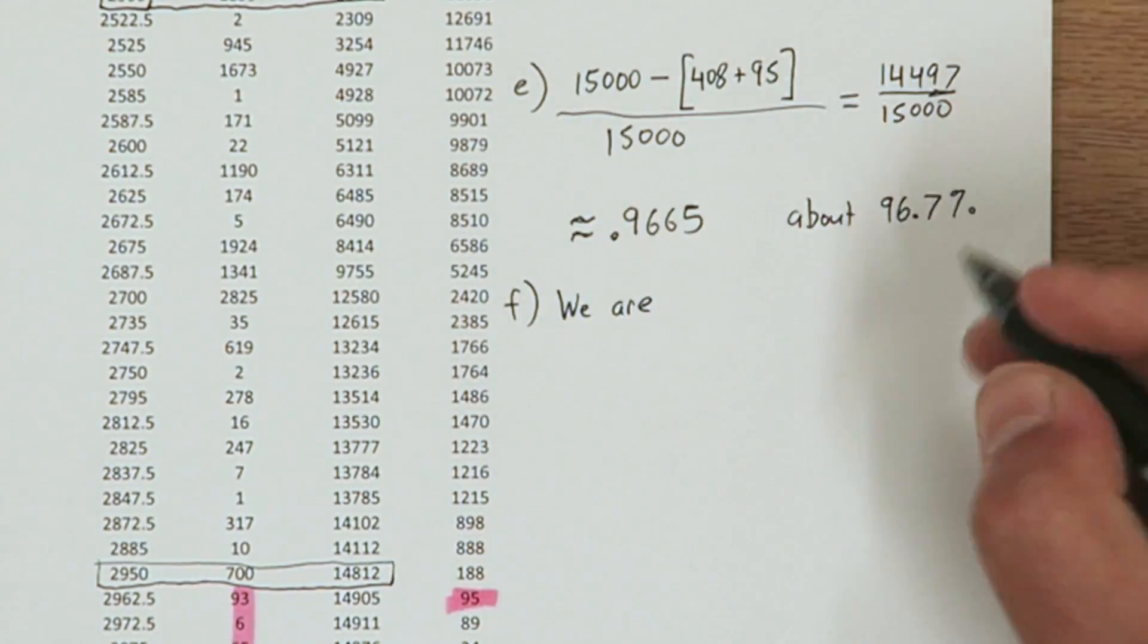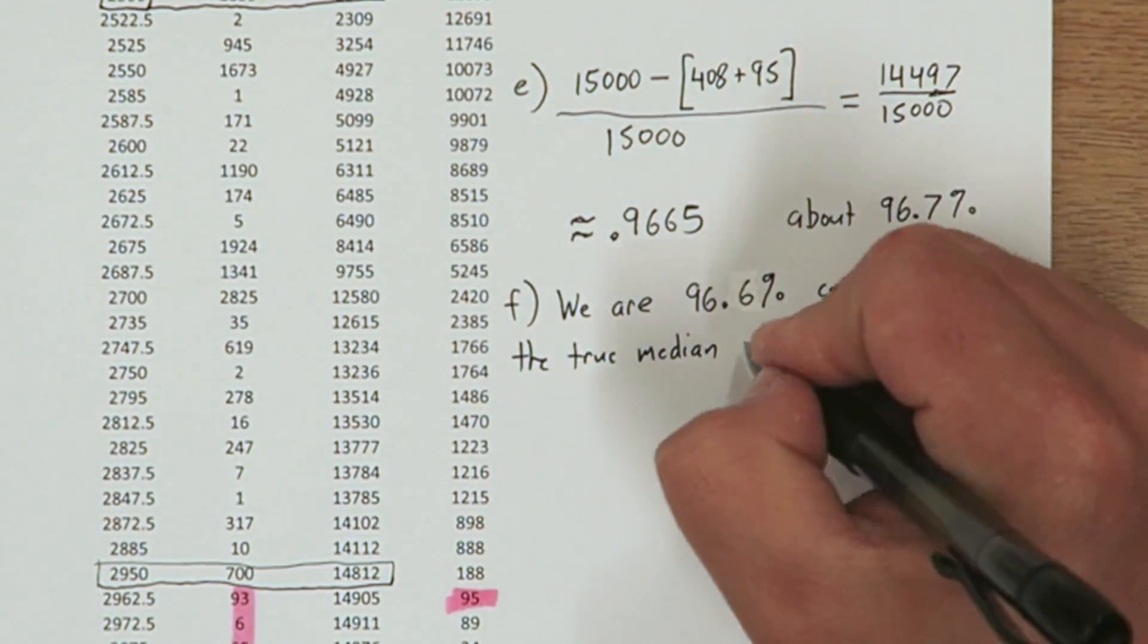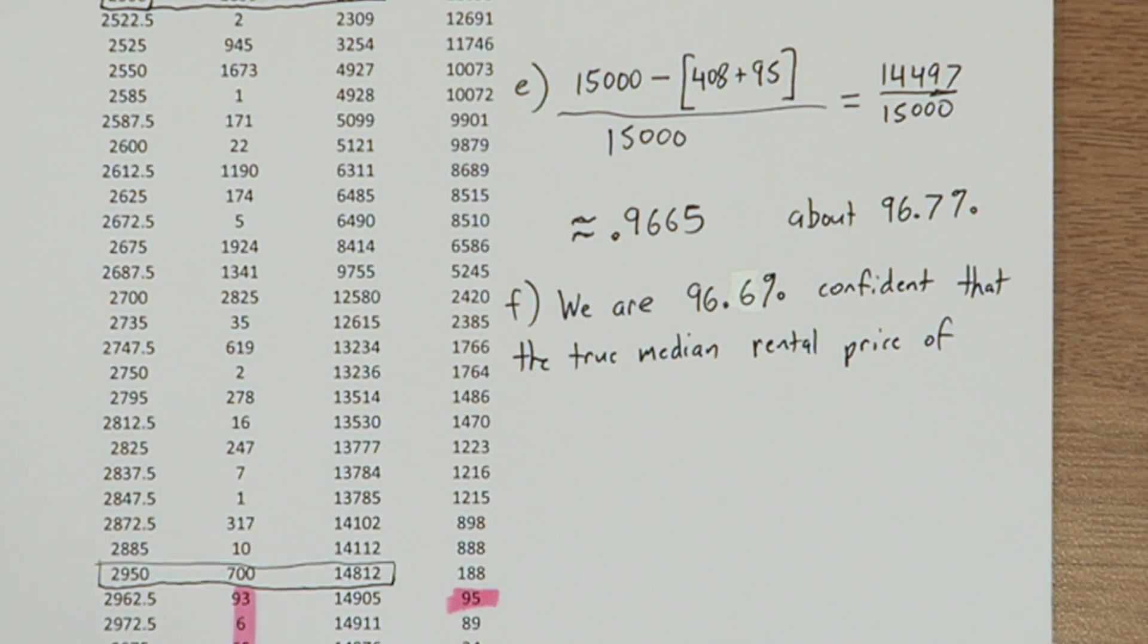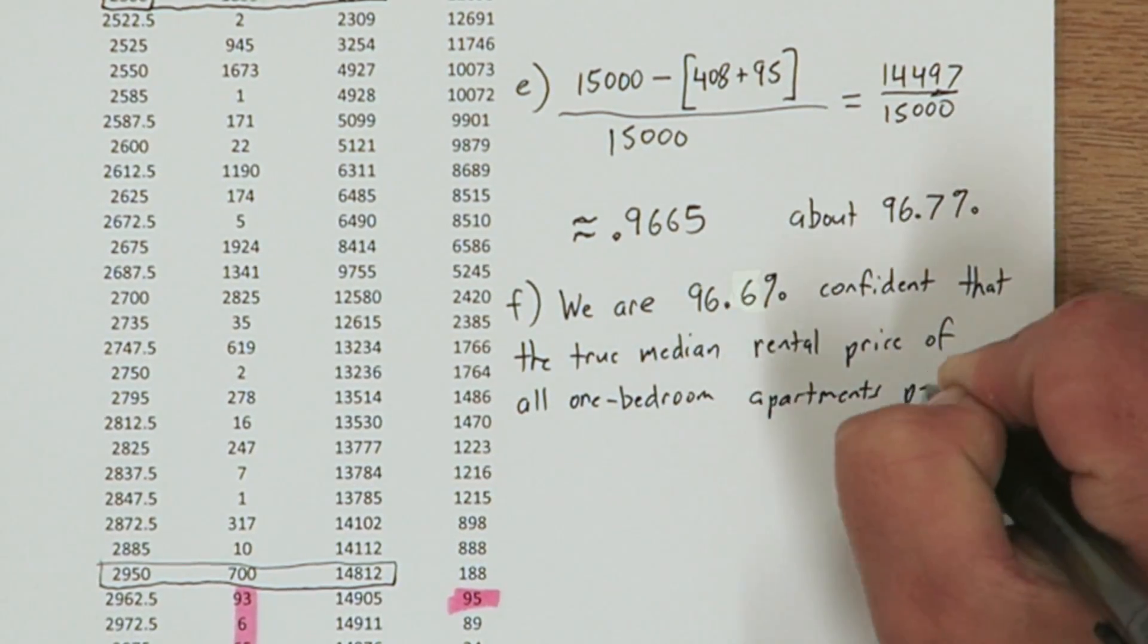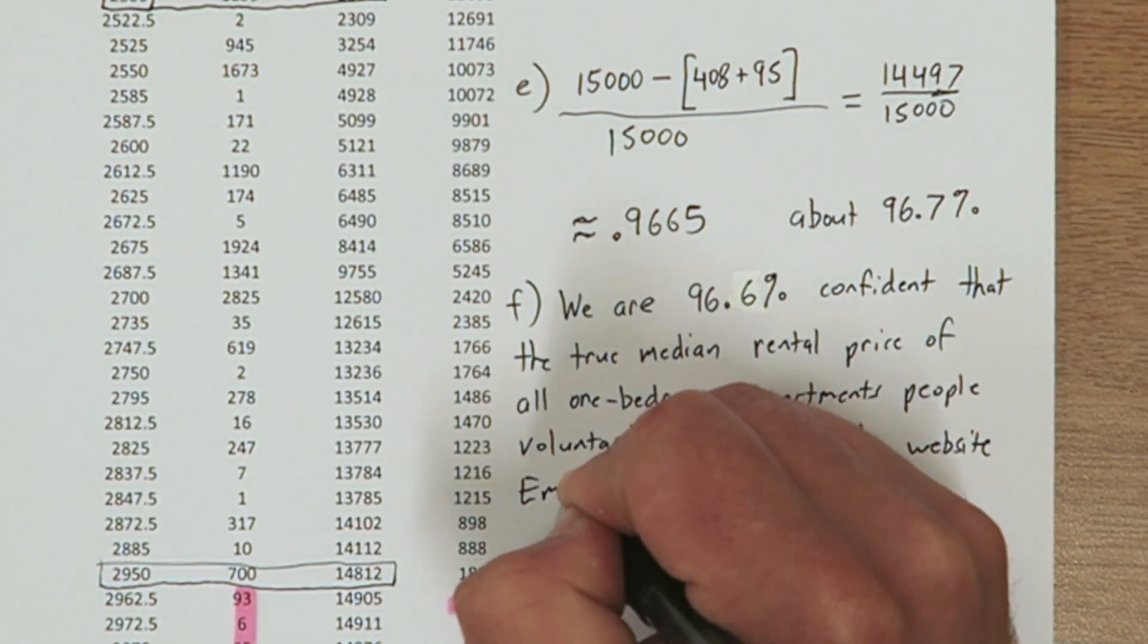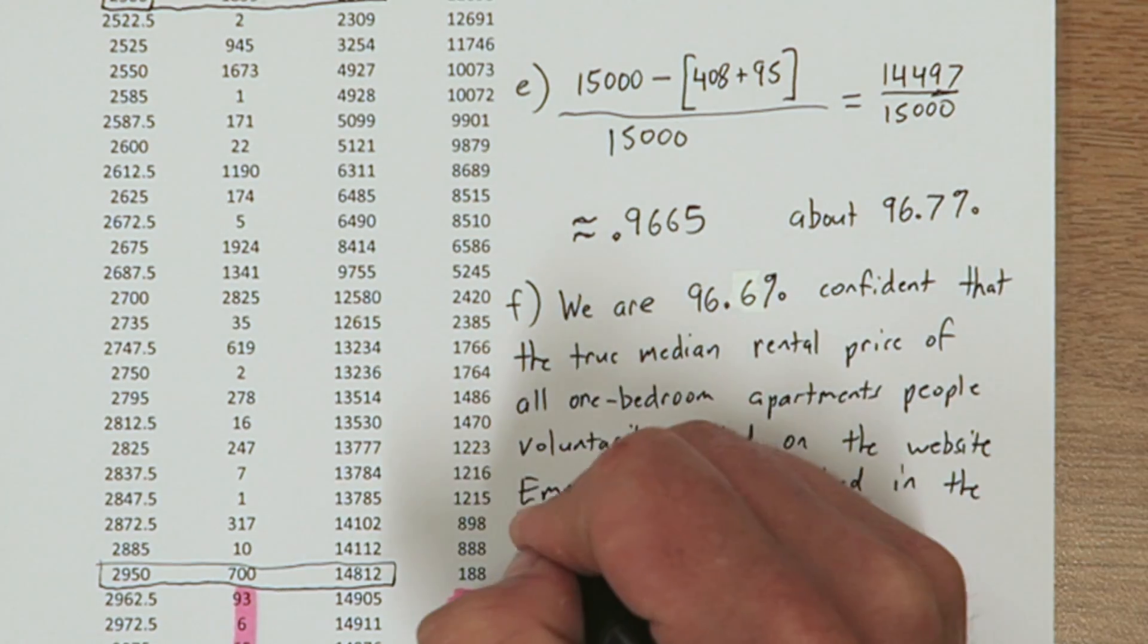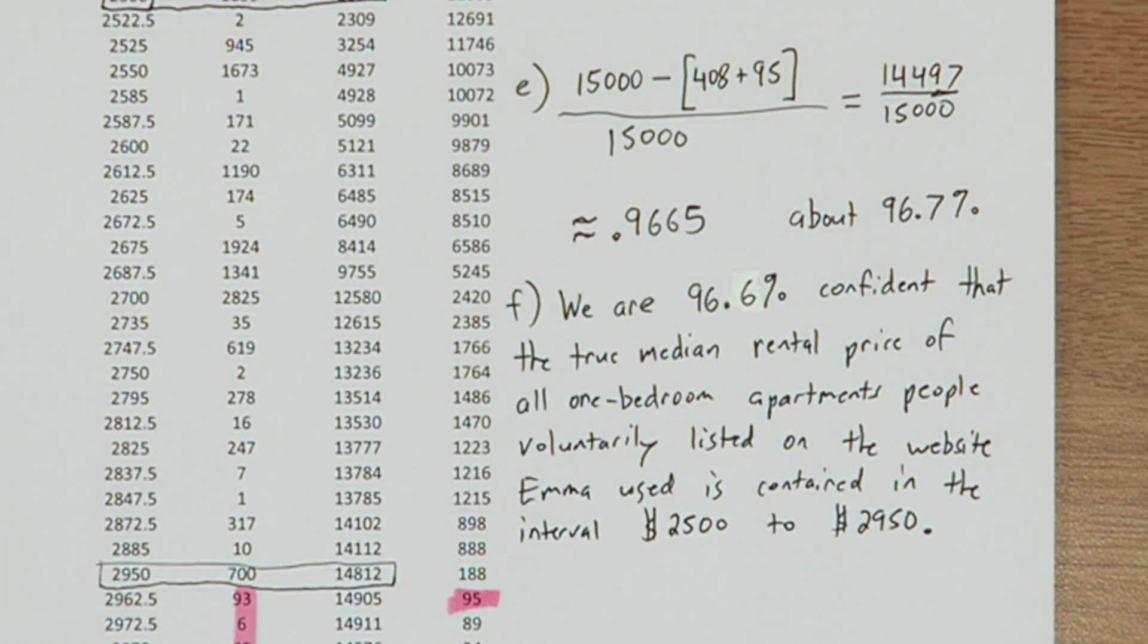So in part F, we're going to tie all that together, everything from part A where we identified the population to part E where we identified the confidence level. So we're going to say we are 96.6 percent confident that the true median rental price of all one bedroom apartments people voluntarily listed on the website Emma used is contained in the interval $2,500 and $2,950.